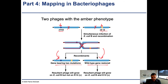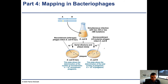One recombinant will be wild type and one will be a piece of DNA that has both alleles on it. All of a sudden you have phages that will have the wild type gene restored, because you've managed to recombine between the two pieces of DNA. You mix the two viral particles together, simultaneously infect bacteria, and then you either have non-recombinants or recombinants that are wild type, and then you can count how often that happens.